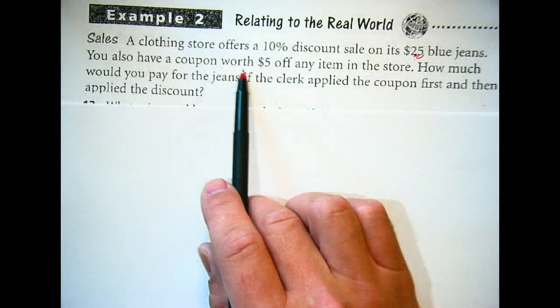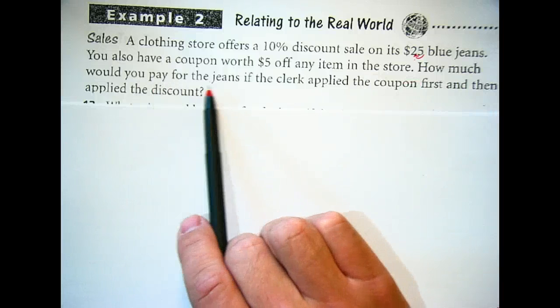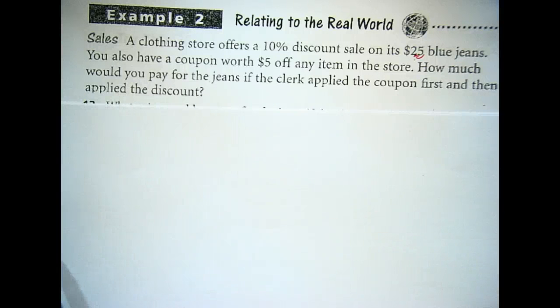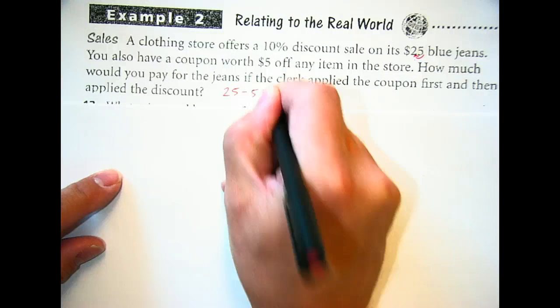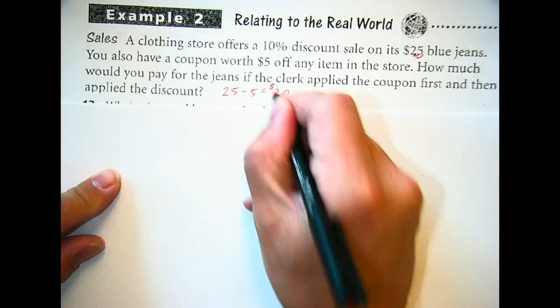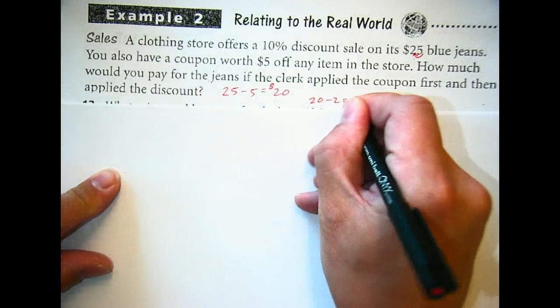You also have a coupon worth $5 off any item in the store. How much would you pay for the jeans if the clerk applied the coupon first and then applied the discount? Well, let's do that. We go 25 and we subtract 5. We get 20. And then we take 10% off of 20. How much are we taking off? 2. 20 - 2 is 18.